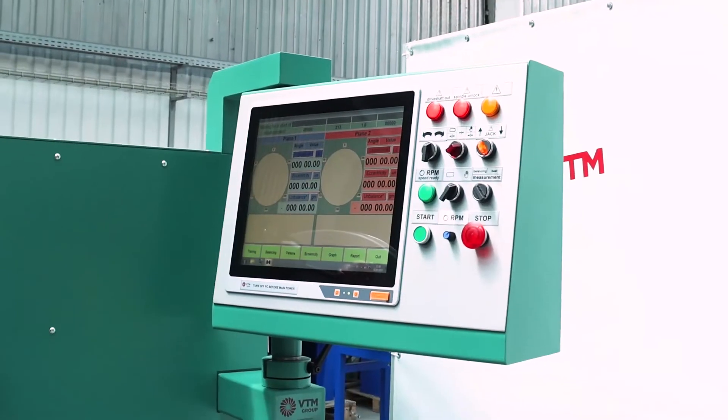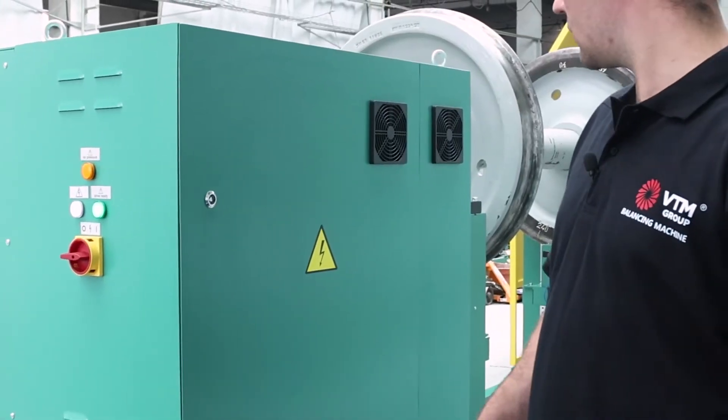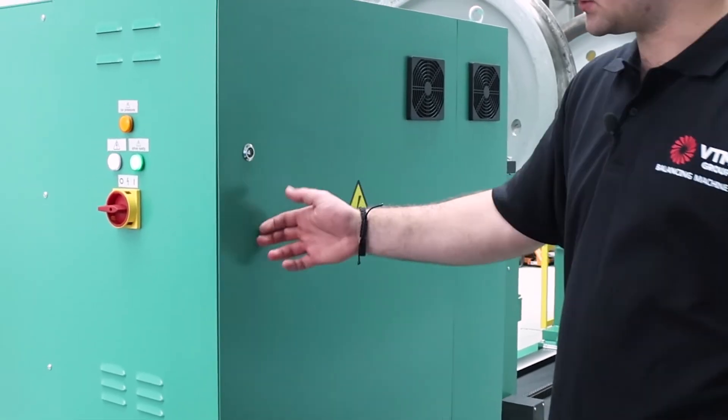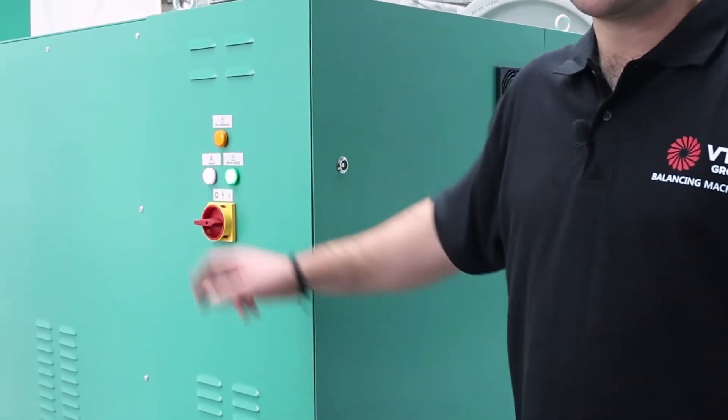There is a control panel on the front side of the machine. On the back side of the machine there is a pneumatic panel, an electric cabinet, and a main switch.